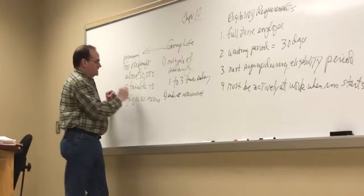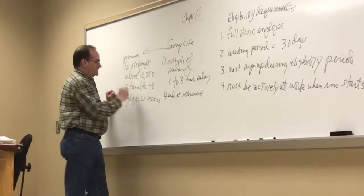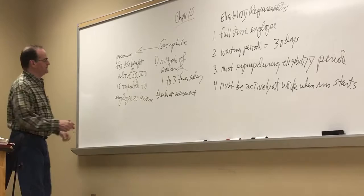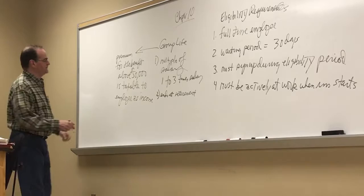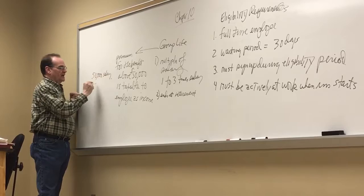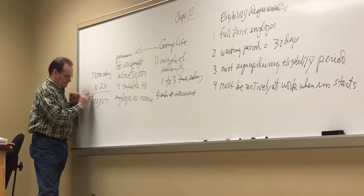Now, so, suppose I'm working for this company, and the benefit is two times salary, right? And I'm making $50,000. $50,000 is my salary, and the benefit is two times. So, the benefit is going to be $100,000. That means that the coverage they're buying on me is $100,000.